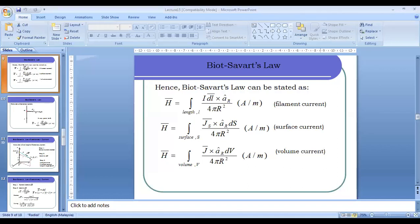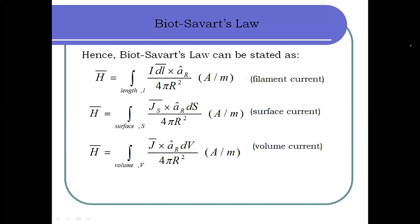Hi, we meet again. This is a continuation of Part 1 of Lecture 15. In Part 1, we stopped at the slide showing the equations of Biot-Savart's law for respective current distributions: the H field for line current distribution, the H field intensity for surface current density, and the H field intensity for volume current.